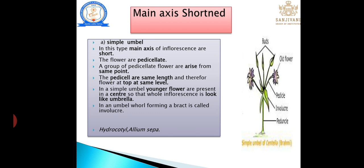Main axis shortened — simple umbel: the main axis of the inflorescence is short, and all flowers are produced from the same point, reaching the same height, forming an umbrella-like structure. Flowers are pedicellate with the same length pedicels. At the top, there are involucre bracts at the base of the flower production region. Younger flowers are at the top, older flowers at the base.